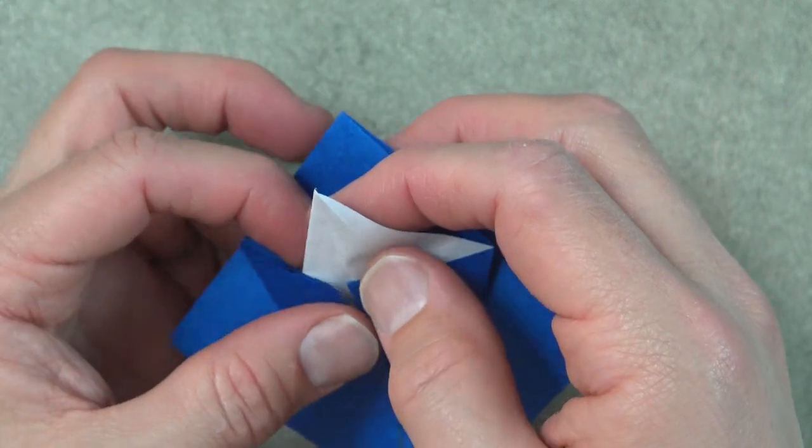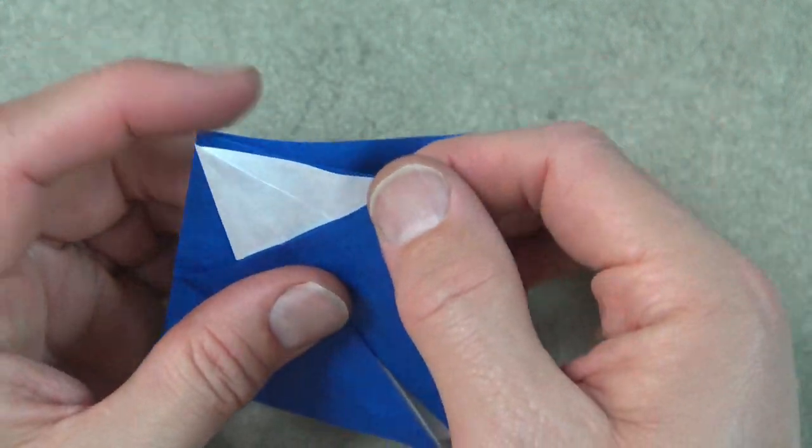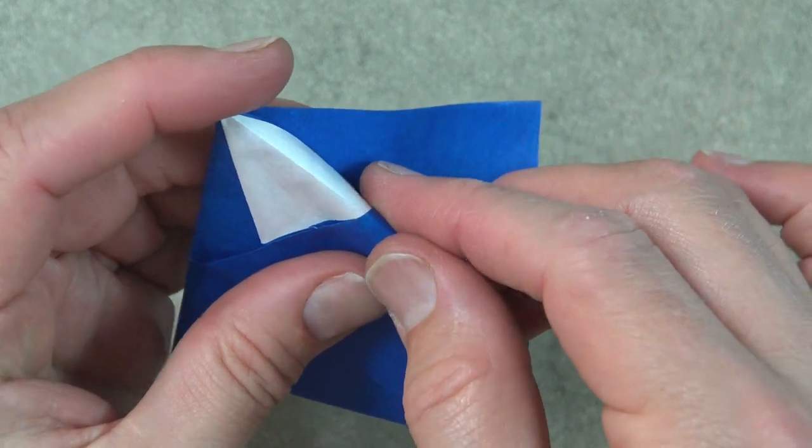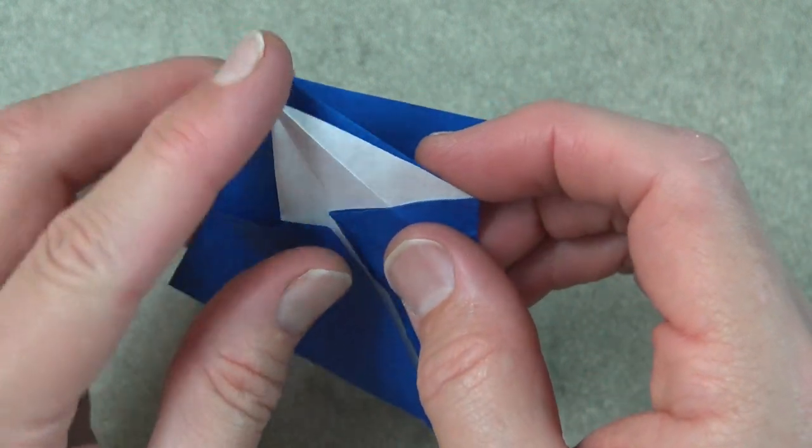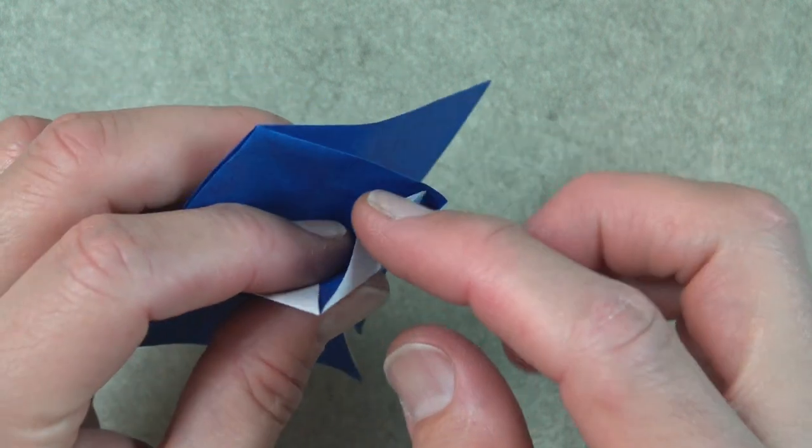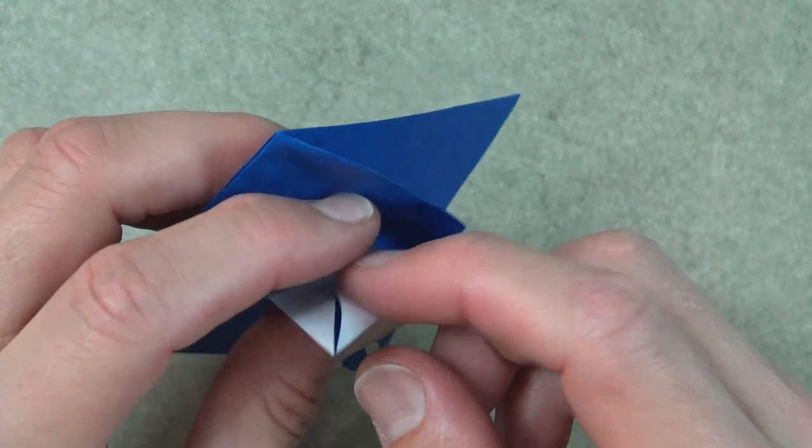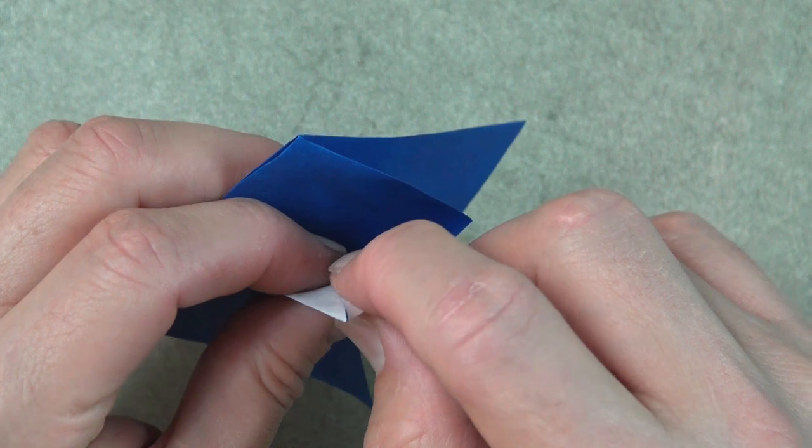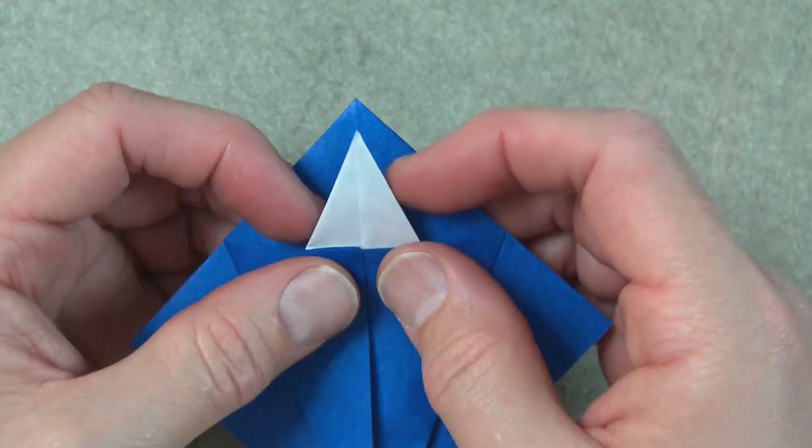And repeat on this side. So first make the fold very lightly. Unfold. And now take this interior flap and fold it inside. So it's like that.